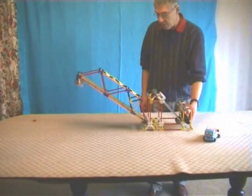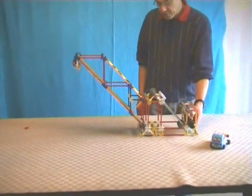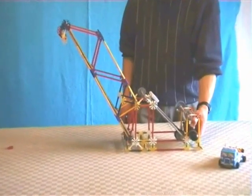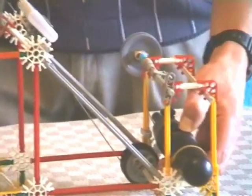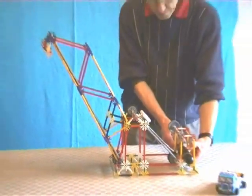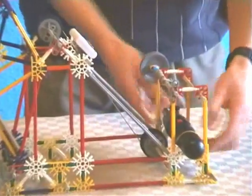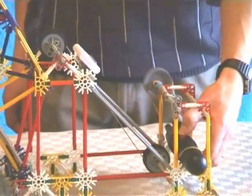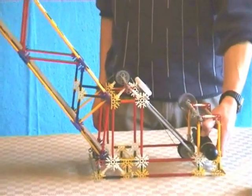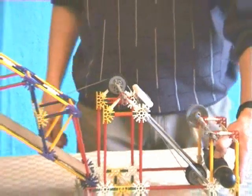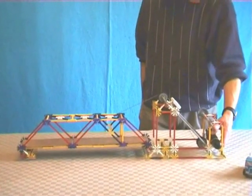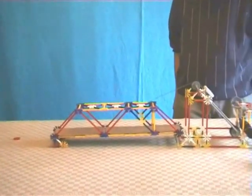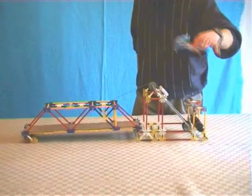I'm holding my finger on the switch so that the bridge continues to lift until it reaches the highest position. And even though the motor is continuing, the bridge stays fixed in that position. I can now reverse the switch, and I can lower the bridge. It's now ready to allow traffic to cross.